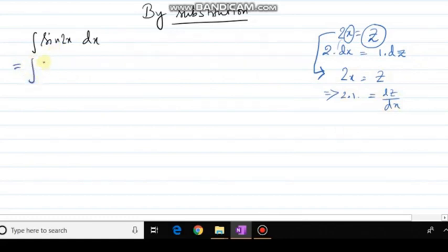So now this integration will be 2x equals z, integration of sin z. And what is my dx from here? dx will be dz divided by 2. So half the constant term will go outside and integration of sin z I know that is minus cos z plus c.